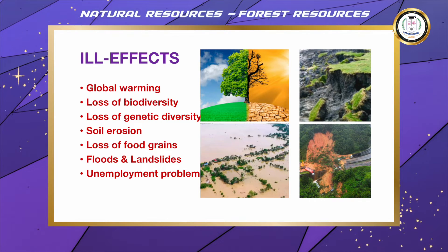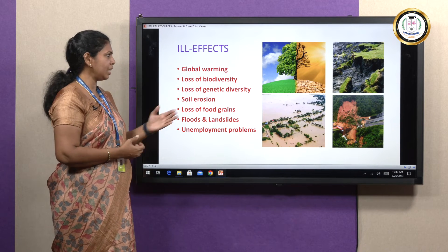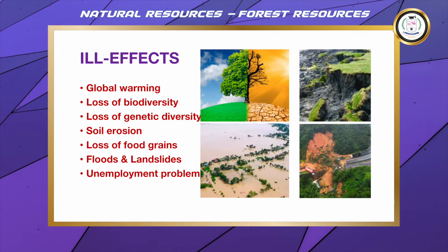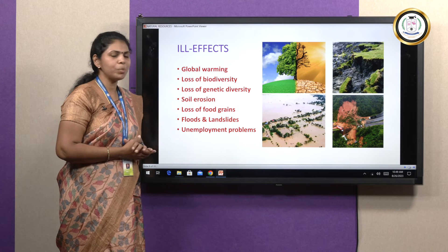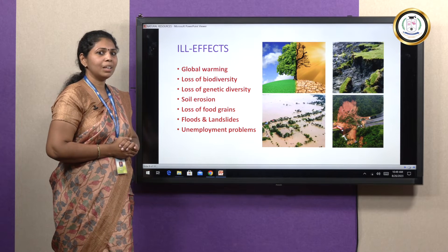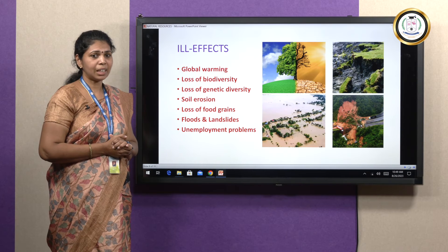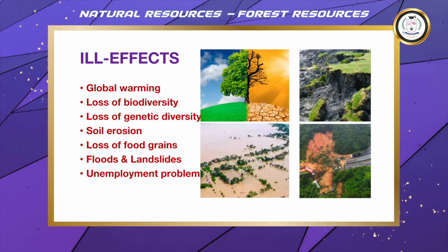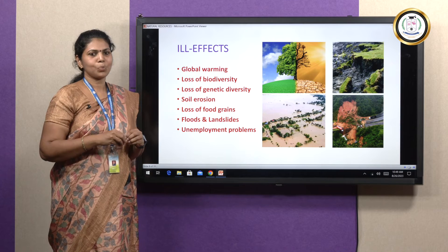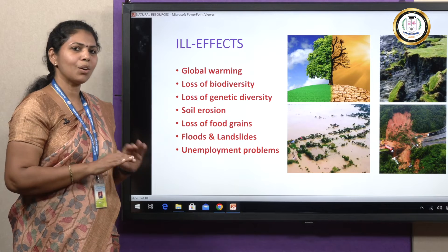Now, what are the ill effects? We have depleted the forest almost, so what are the consequences? Global warming — when the globe was green on one side, as we start removing the forest, the globe is becoming very dry, hot, warm, and welcoming all diseases and negative effects. Loss of biodiversity — our earth is a beautiful place with biodiversity and immense varieties of species, but all these are dwelling in forests. Once we start removing the forest, biodiversity is affected and there is an ecological imbalance.